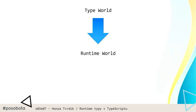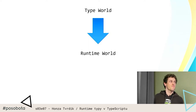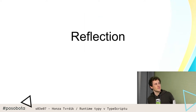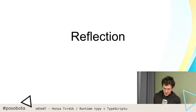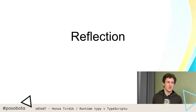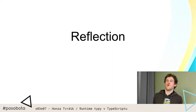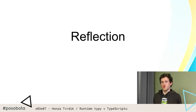Takže vy byste chtěli dostat tu typovou informaci, kterou máte v tom TypeScriptu, do toho runtimeového světa. A samozřejmě tohle TypeScript není jediný jazyk na světě, který to řeší — je to stejný problém jak v PHP, jak v Javě, a má ověřená řešení. To řešení se jmenuje reflexe. A není to sice úplně elegantní řešení, ale to je to, jak se to typicky řeší v jiných jazycích.